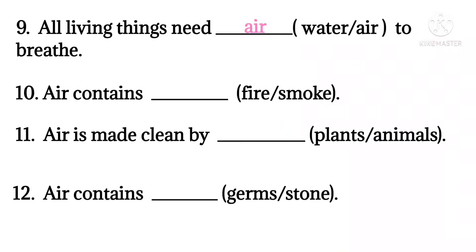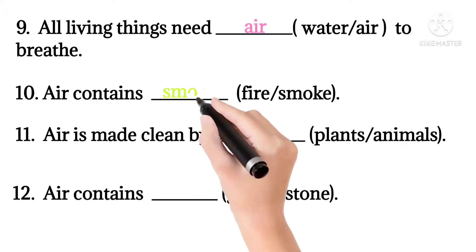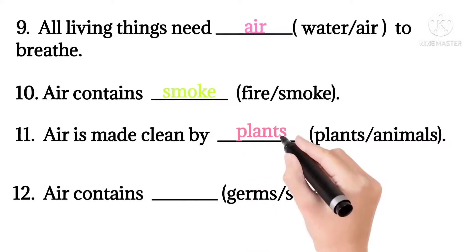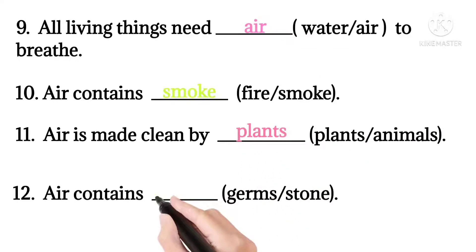When we burn things, smoke is given out. When smoke gets mixed with air, it makes the air dirty. Question 11: Air is made clean by plants or animals. Correct answer: plants, because plants give out oxygen.